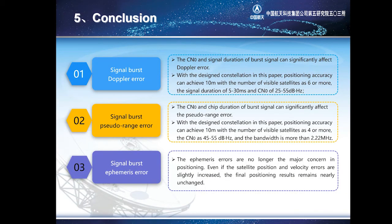First, the carrier-to-noise ratio and signal duration of LEO navigation signals can significantly affect Doppler error. With the increase of Doppler error, the positioning error increases. With the designed constellation in this paper, positioning error can achieve 10 meters with the number of visible satellites as 6 or more, a signal duration of 5 to 30 ms, and a carrier-to-noise ratio of 25 to 55 dBHz.